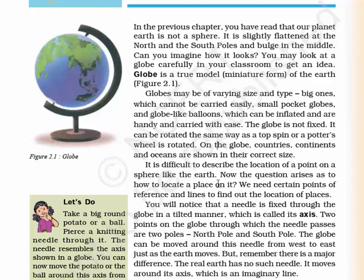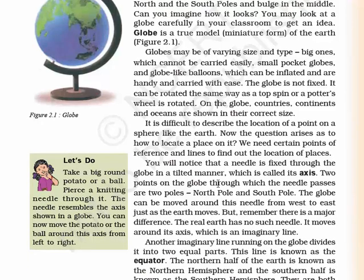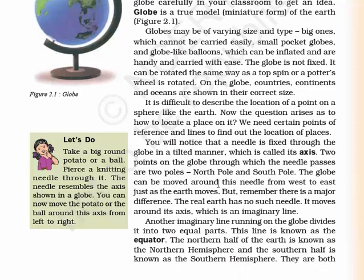If you see the globe, it has some imaginary lines. They are the equator — a horizontal line passing through the center of the globe, which divides the globe into the northern and southern hemisphere — and a vertical line, the prime meridian, fixed from the North Pole to the South Pole, which is crucial in deciding various time zones.